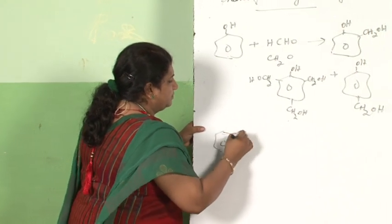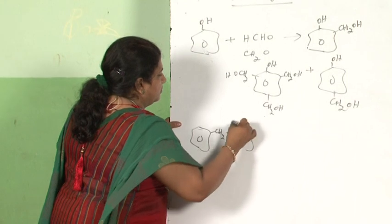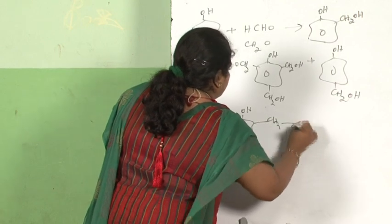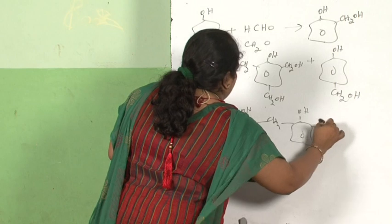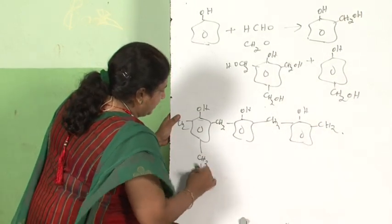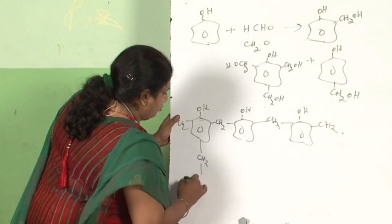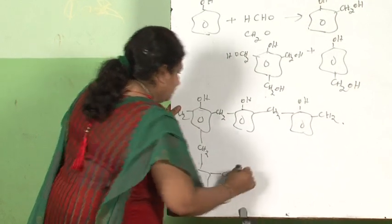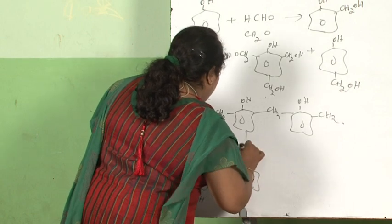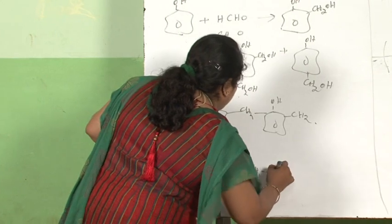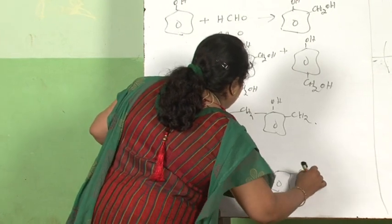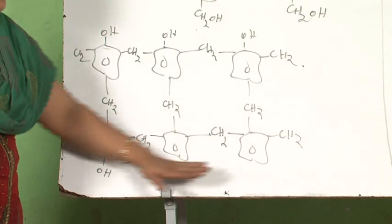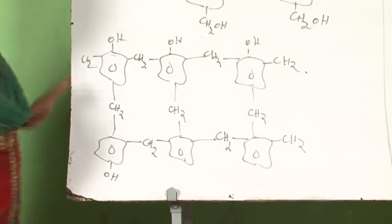One layer of Nervilac is written here with CH2, CH2, CH2. Here this is combining with one more layer of Nervilac like this OH. Two different layers combined together give a cross-linked polymer linking between two different layers, which is called Bakelite.